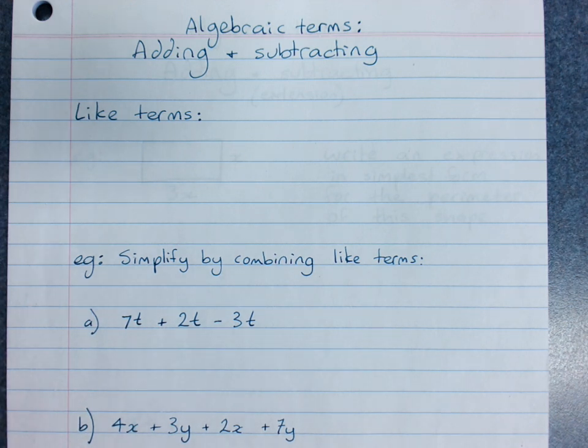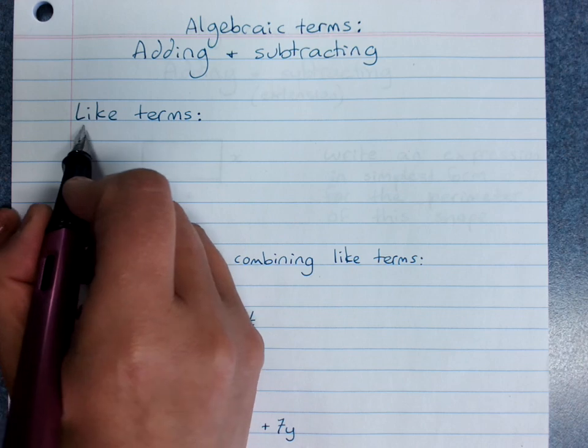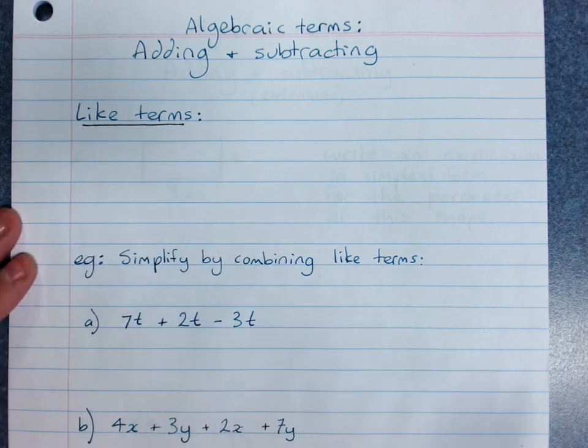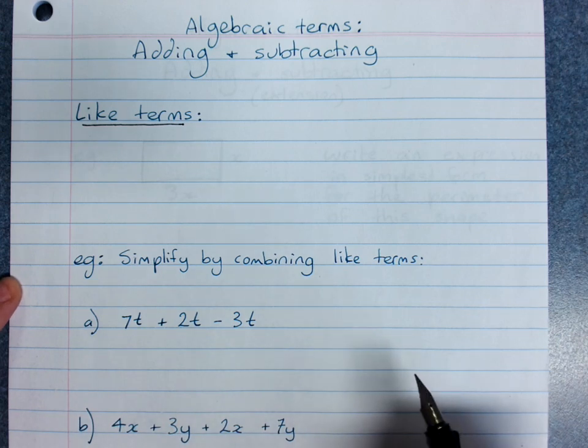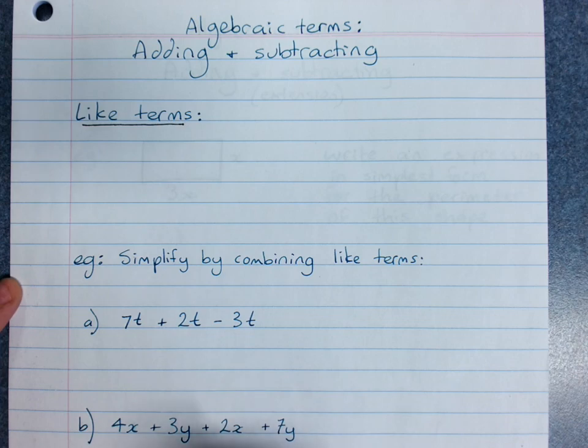Algebraic terms: simplifying by adding and subtracting. When we are adding and subtracting in algebra, we can only add and subtract what's called like terms. Like terms contain exactly the same pronumerals, and the pronumeral parts have the same powers.